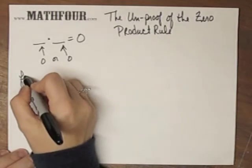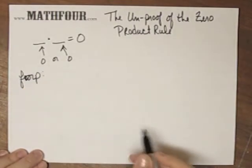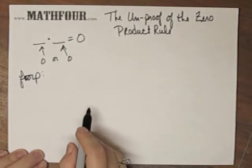So here's the forp, which is proof backwards. This is the un-proof.